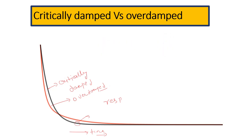Both the overdamped and critically damped systems are non-oscillatory. To summarize: the underdamped system is oscillatory in nature and can be stable or unstable. The critically damped and overdamped systems are always stable and move towards the equilibrium position. The key difference is that the critically damped system gives the fastest response — it takes the least amount of time to reach equilibrium. We can also compare different values of the damping factor to see how the response changes.